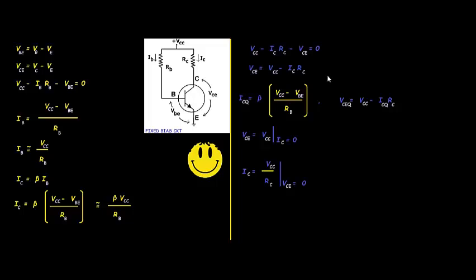For the load line analysis, if we consider collector current IC equal to zero, then VCE equals VCC — this gives one end of the load line. Conversely, if VCE equals zero, then IC equals VCC divided by RC — this gives the other end of the load line.